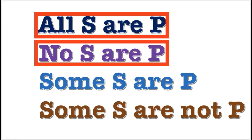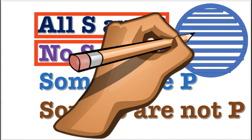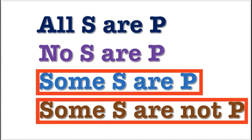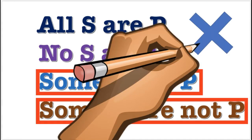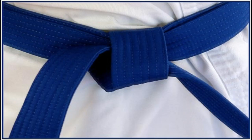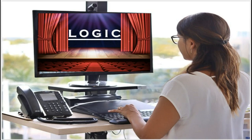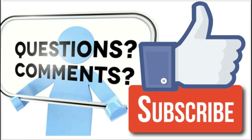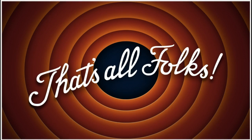Remember: universal propositions always require shading, and particular propositions always require an X. Now you're one step closer to receiving your blue belt in logic. See my other videos on logic. Comment, like, share, and subscribe. Have a great day.